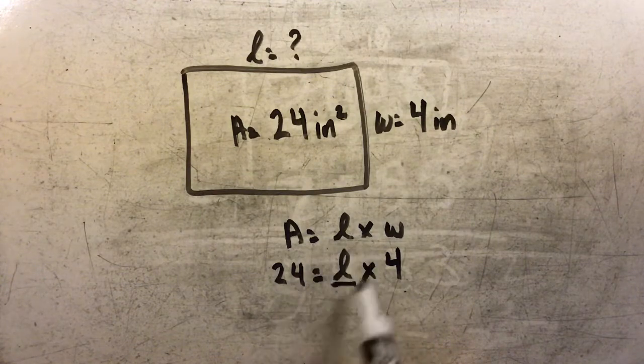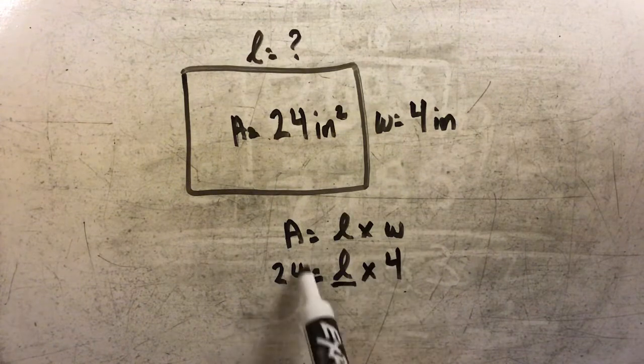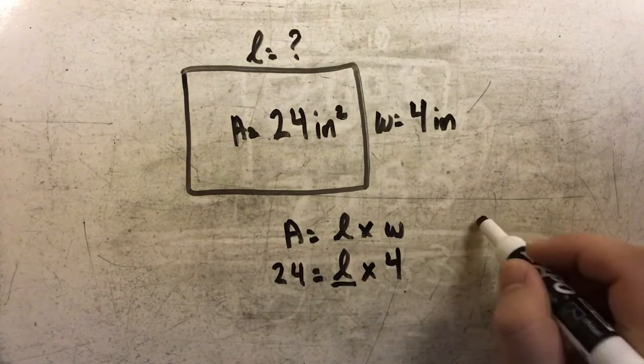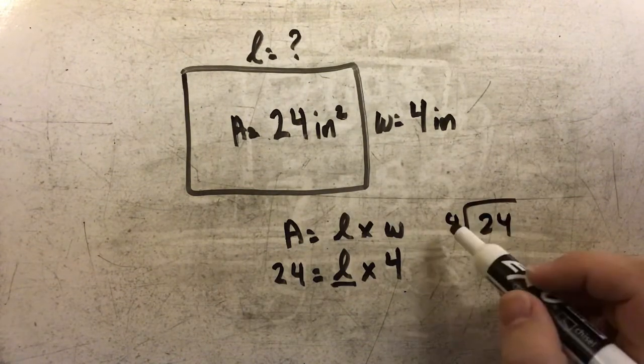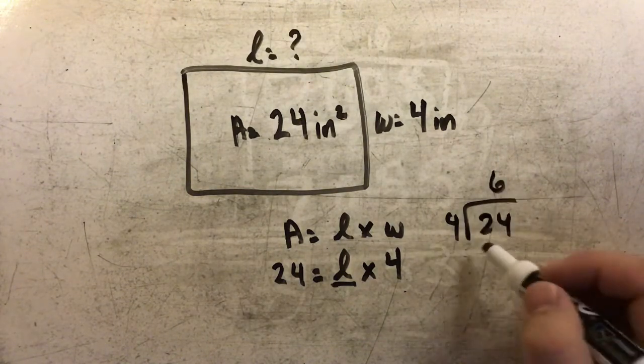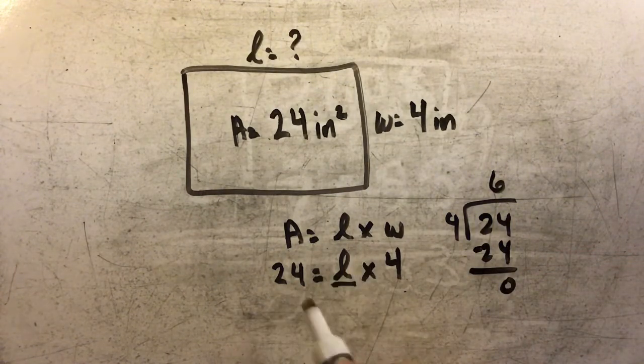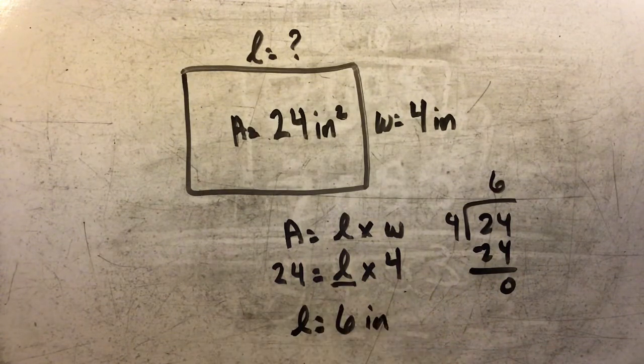To find the missing length, I need to divide my area by my width. 24 divided by 4 is a basic fact. 4 goes into 24 six times with nothing left over, so my missing length is 6 inches.